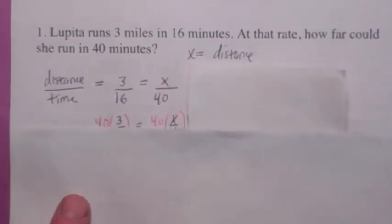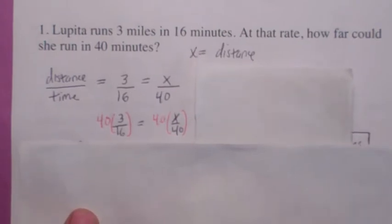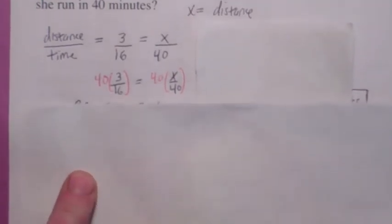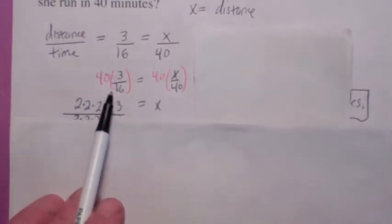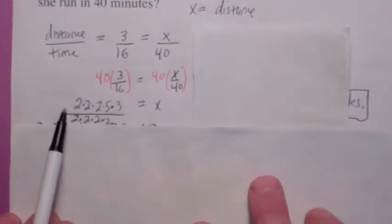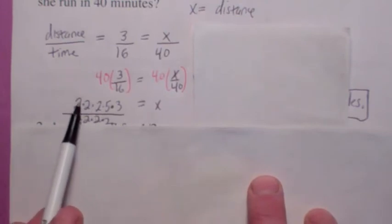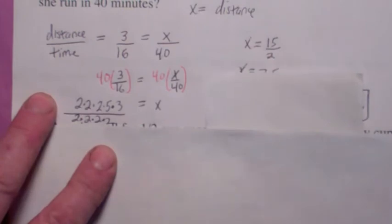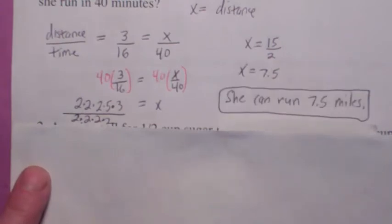Now to finish this problem isn't too hard. To solve for the variable x, the distance traveled in 40 minutes, you'd multiply both sides by 40, right? Multiply by the reciprocal. And then on the right side, you just get x. On the left side, instead of multiplying this out, I'm going to start to factor it. That's what we learned in chapter 2, right? If you factor this, I believe you can cancel three factors of 2. You get 15 over 2, and so x equals 7.5. That's how far she can run in 40 minutes. Make sure you answer in words. She can run 7.5 miles in 40 minutes.